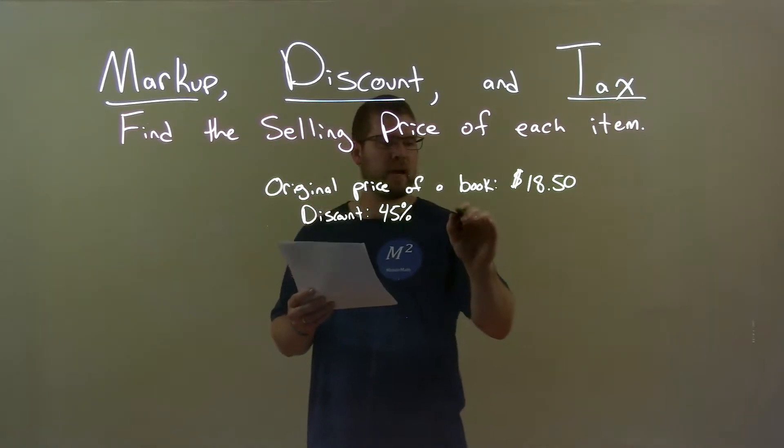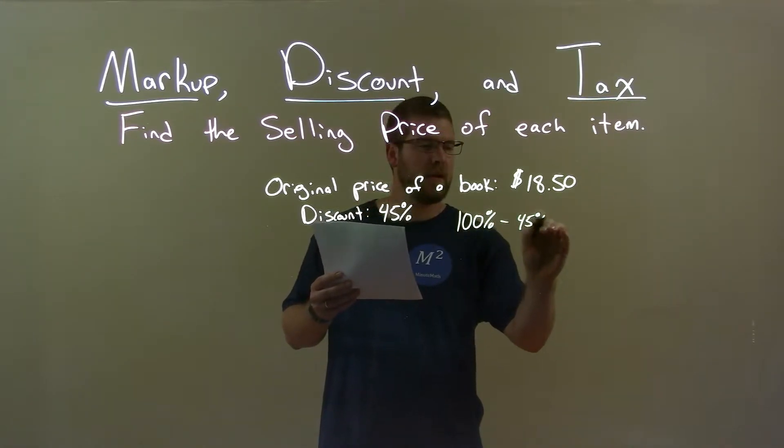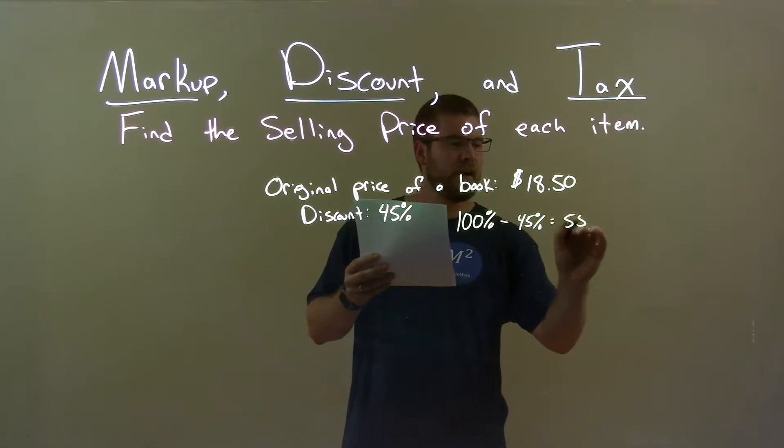So, 45% discount, right? If we want to find what percent of the total book we're actually going to pay, we take 100% minus 45%, and we get a good old 55%.